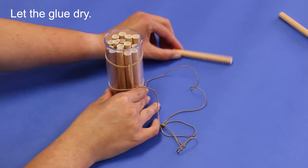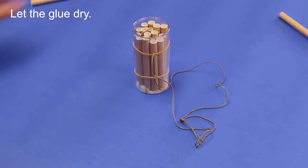Once all of the straws are in the tube, simply leave the tube sitting flat on the table to allow the glue to dry.